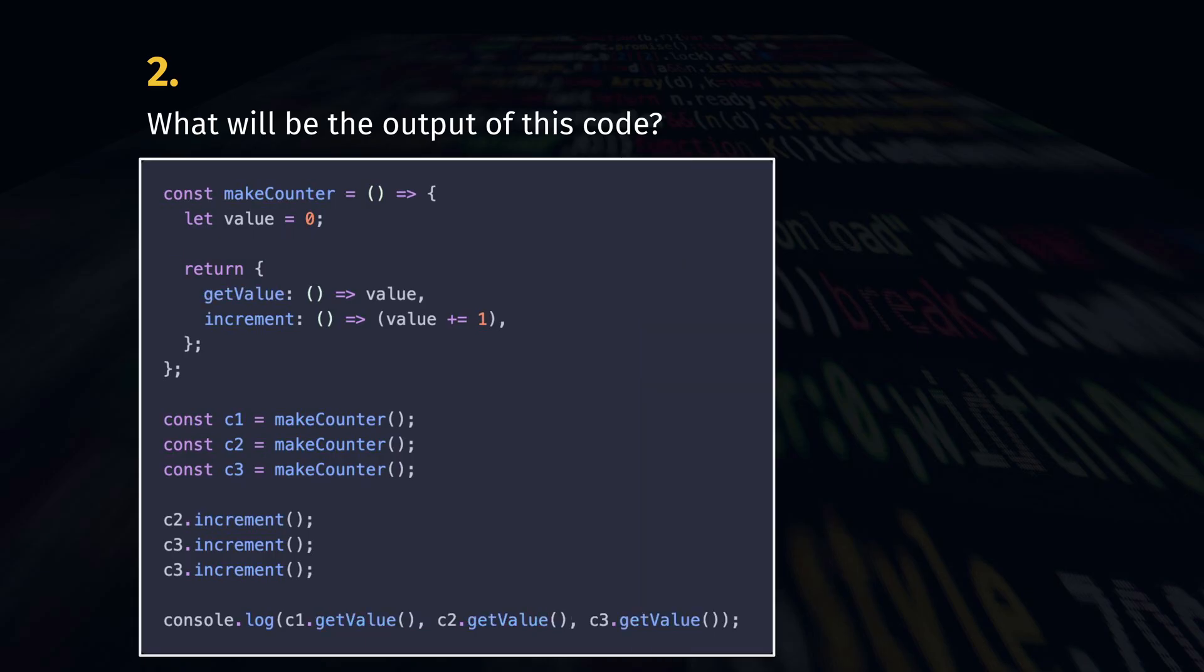To fix this we could simply wrap the value in a function. Now, each getValue closes over a particular value and we get 0, 1 and 2 from each counter. Again, this is thanks to the individual lexical environments that were created by calling makeCounter many times.